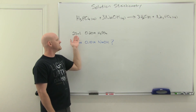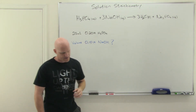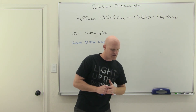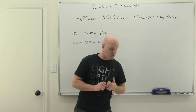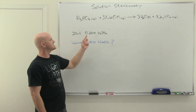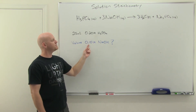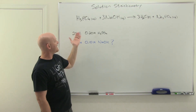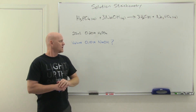We've got 25 milliliters of 0.20 molar H3PO4. The question: what volume of 0.10 molar NaOH must be added to react completely with 25 milliliters of 0.20 molar H3PO4?